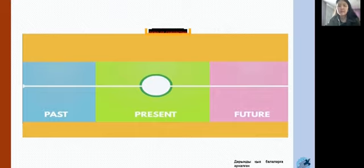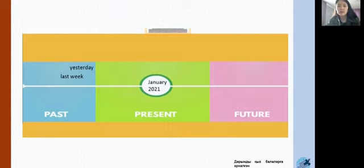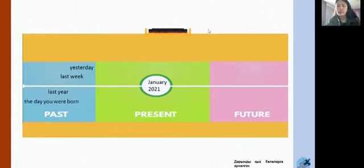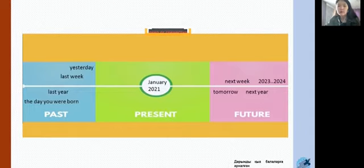Let's imagine that this line is the time. Currently it is the beginning of January 2021. In this direction we have the past — like yesterday, last week, last year, or the day you were born. And in this direction we have the future — like tomorrow, next week, next year, 2023, 2024, and so on.